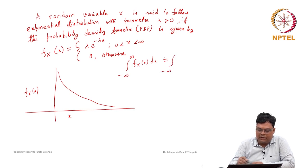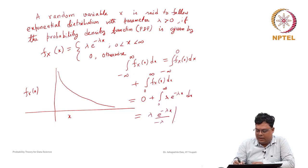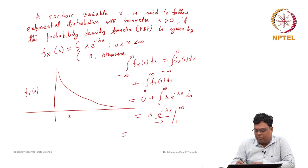The integral from minus infinity to plus infinity splits: it is 0 from minus infinity to 0, plus from 0 to infinity it is lambda e to the power of minus lambda x dx. We have to take the integration up to some real number capital A, then take the limit as A goes to infinity. At x goes to infinity, this goes to 0, so at 0 it is 1. This gives 0 minus minus of 1, so this is equal to 1.